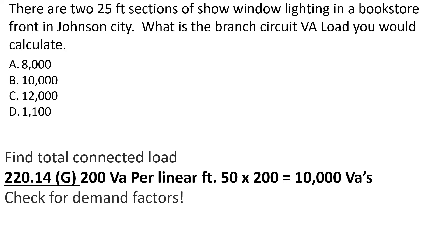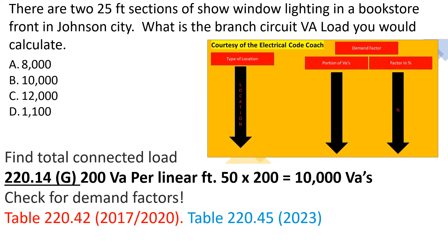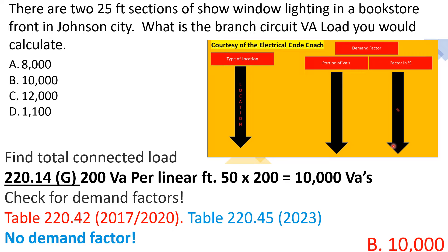Now we check for demand factors. We head over to that same table and look for our type of occupancy on the left — we're not going to find it. We cross over and find that it's 100%, so there's no demand factor applied, and we select B. Great job!